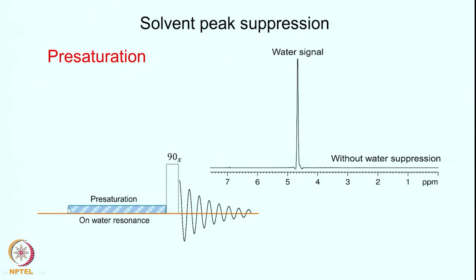This is achieved with a pre-saturation period, where you put a second RF on the water resonance. Following that, you apply a 90-degree pulse and collect your FID as usual. At this point the water resonance is reduced to a very significant extent, and once you apply the 90-degree pulse along with the other signals, you detect the FID — this will not overload the receiver or cause the dynamic range problem.